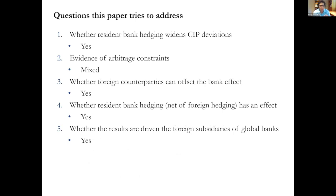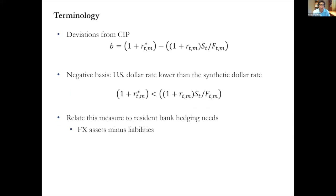There are several related questions the paper tries to address: whether resident bank hedging widens CIP deviation — my understanding is the evidence says yes; there is mixed evidence of arbitrage constraints; evidence that the foreign counterparty can partially offset the effect from resident banks; and evidence that resident banks' hedging net of foreign hedging has an effect, driven by foreign subsidiaries of global banks located in Mexico.